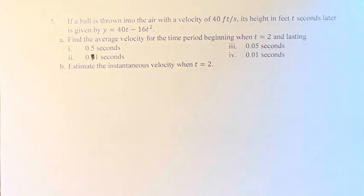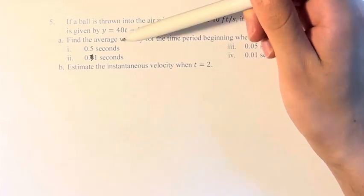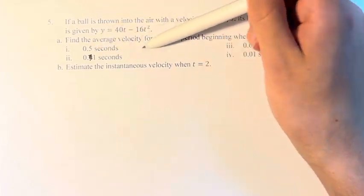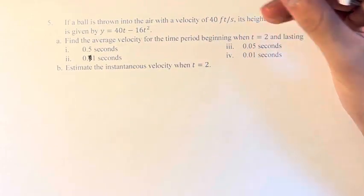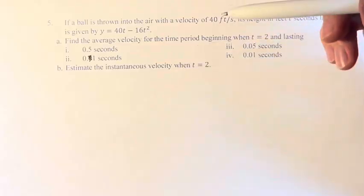In order to do this, we need to come up with some points because we have a function here, and the average velocity of this function is going to be the slope of the secant line that goes between the point when t equals 2 and t equals some value greater than 2.